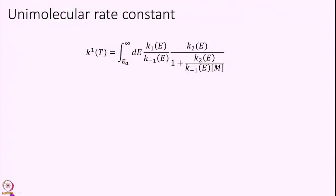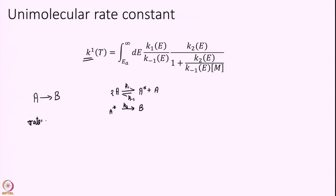As a quick recap of what we discussed in the last module: the problem we have is unimolecular decay where the overall reaction has only one reactant. The mechanism proposed by Lindemann was that two molecules of A collide to give an excited A* and A, and A* gives B. Using chemical kinetics, the overall rate is defined as: rate = −d[A]/dt = d[B]/dt = K1 × [A].